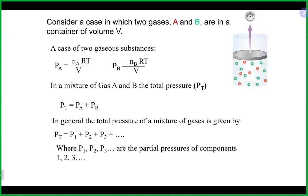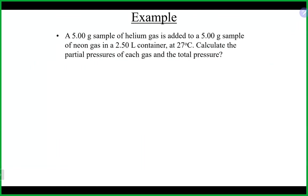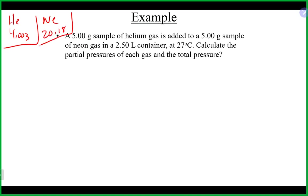Let's look at an example. You have 5 grams of helium and 5 grams of neon in a 2.5-liter container at 27 degrees Celsius. What are the partial pressures of both gases, and what is the total pressure? Helium has a molar mass of 4.003 g/mol, and neon is 20.18 g/mol.